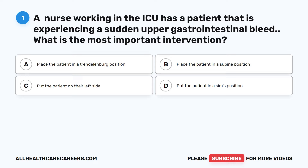Question 1. A nurse working in the ICU has a patient that is experiencing a sudden upper gastrointestinal bleed. What is the most important intervention? A. Place the patient in a supine position. C. Put the patient on their left side. D. Put the patient in a SIMS position.